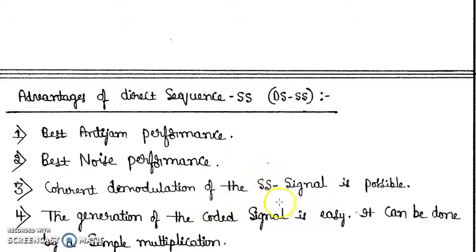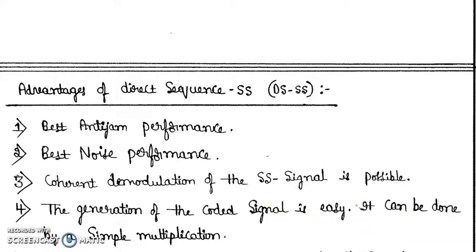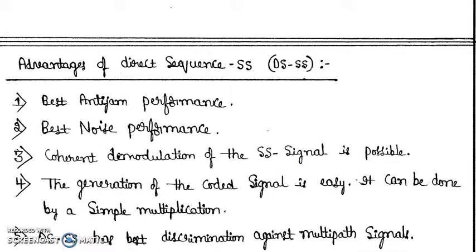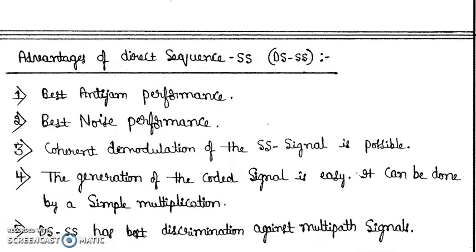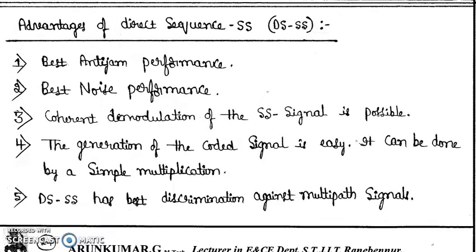Coherent demodulation can take place in your direct sequence spread spectrum. The generation of coded signal is very easy and it can be done by a simple multiplication. So DSSS has best discrimination against multipath signals.